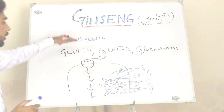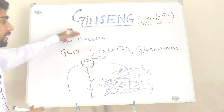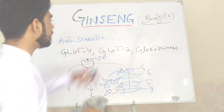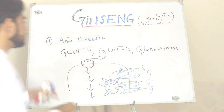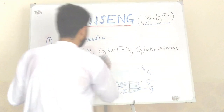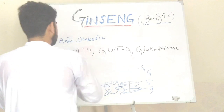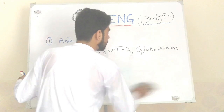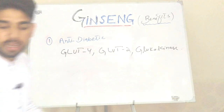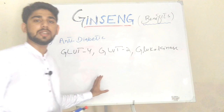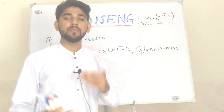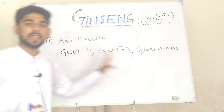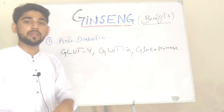In this way, ginseng plays an important role in reducing blood glucose level. It also increases the expression of glucokinase, an enzyme present in the liver that performs phosphorylation of glucose. It captures glucose inside the cell and prevents glucose from entering back into the blood, thereby reducing blood glucose level.